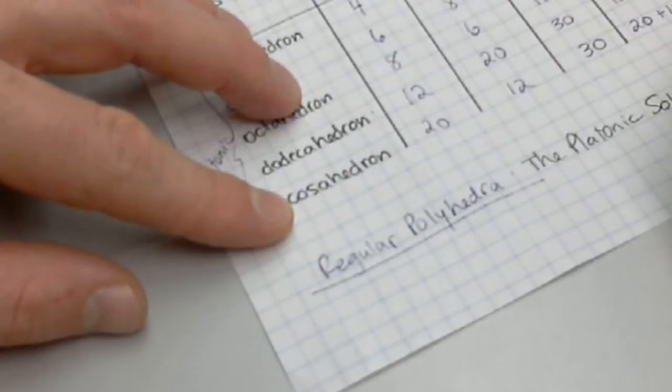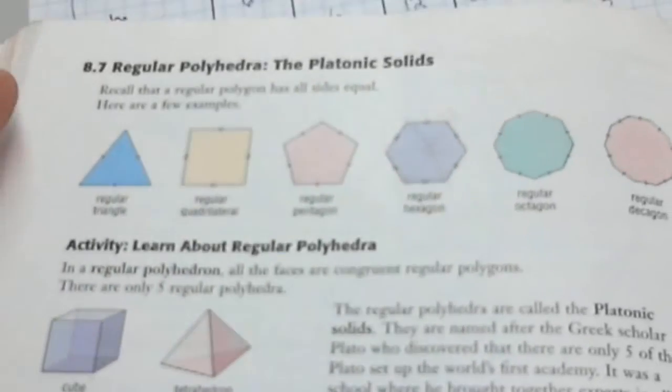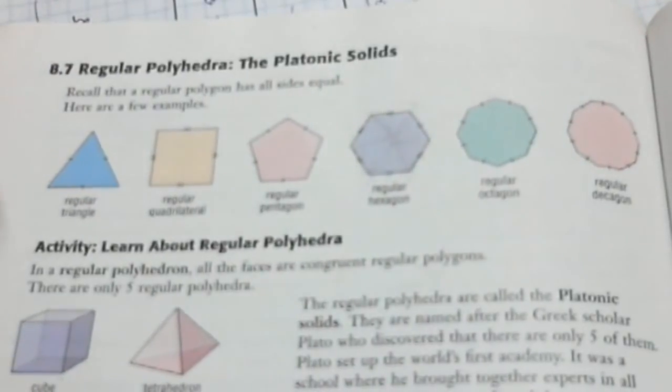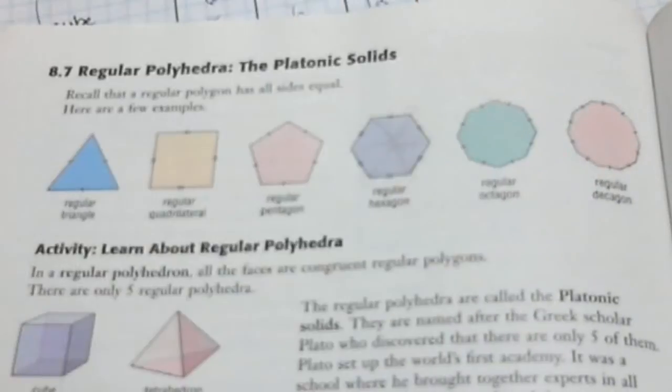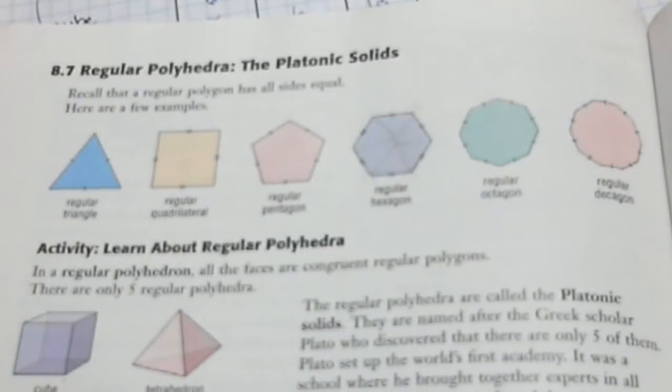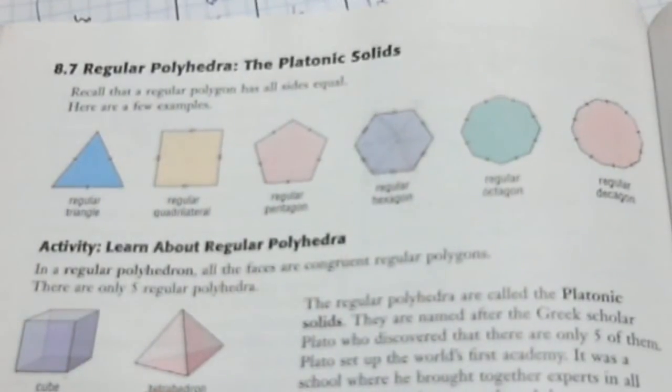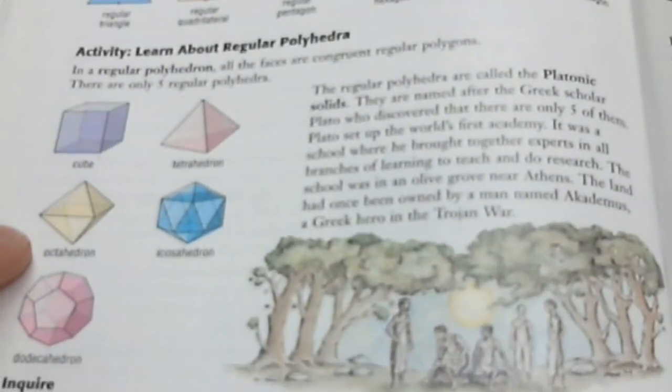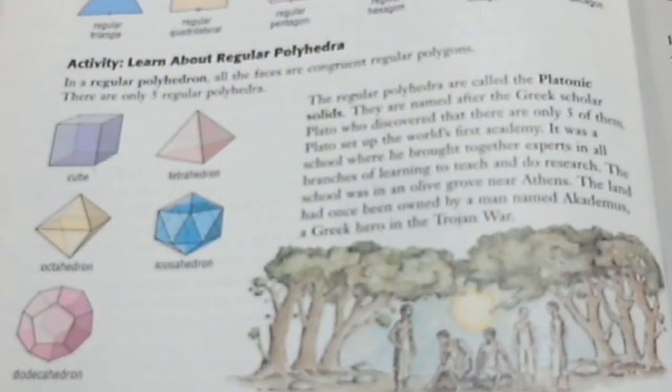They're called the platonic solids. And you'll notice, I'll just show you the stuff out of the book. So here you have these are the regular polygons: triangle, square, pentagon, hexagon, octagon, decagon. Those are the regular polygons. These five shapes here—the cube, the tetrahedron, there's an octahedron, and then there's something called an icosahedron, and then the dodecahedron—these are all the regular polyhedra. They're called the platonic solids.